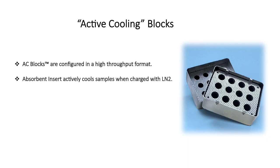The AC block is an aluminum block containing an absorbent insert, which, once charged with liquid nitrogen, releases liquid nitrogen vapors and actively cools samples during homogenization. The lightweight design reduces equipment strength, making it compatible with most plate homogenizers.